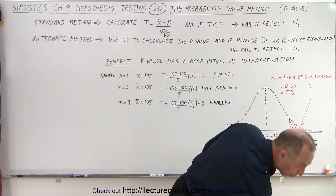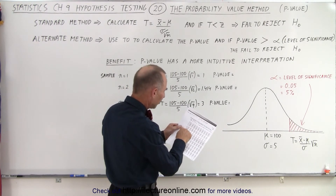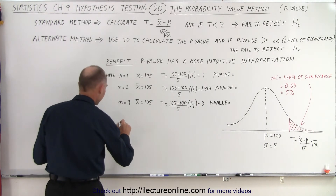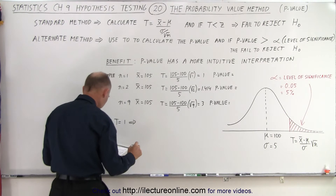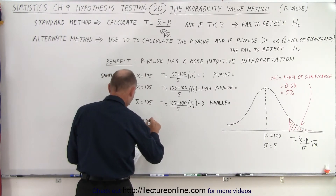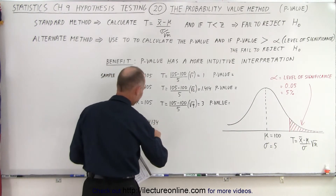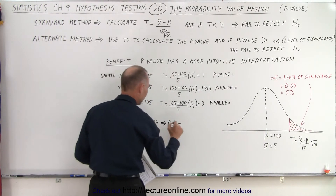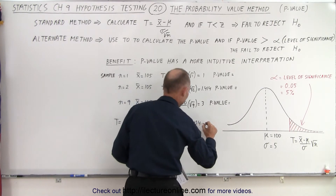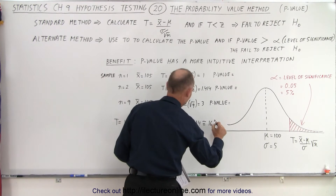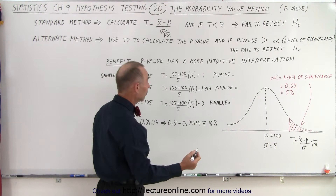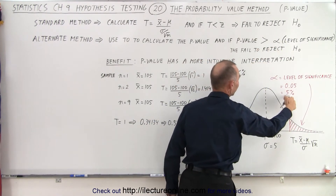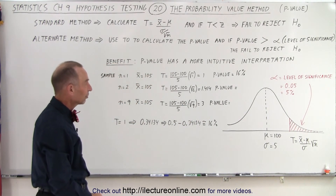How do we calculate the p-value? We go back to our table. We look at 1.0, and 1.0 equates to 0.34134. When t is equal to 1, that corresponds to a table value of 0.34134. Then we take 0.5 — which represents half the normal distribution — and subtract that number from it: 0.5 minus 0.34134 gives us approximately 16%. Because 50% minus 34% gives us 16%. The p-value of 16% is indeed greater than the level of significance of 5%, and so therefore we fail to reject the null hypothesis.